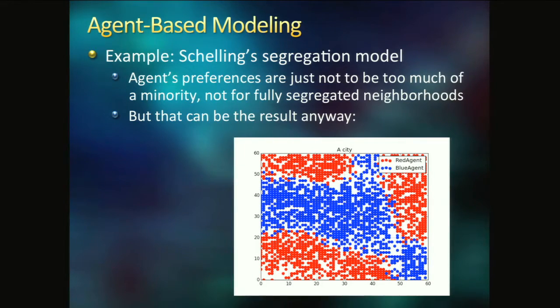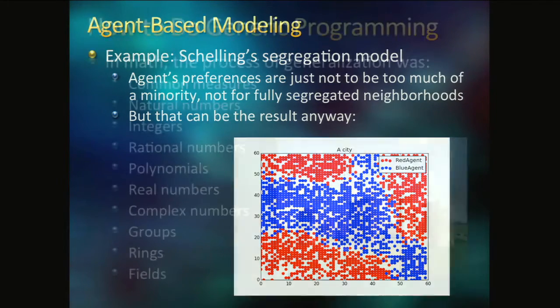Without anyone having a preference for completely segregated neighborhoods, we can get them anyway. We have red and blue agents here, and you just give them a minimum percentage. I want to see at least X percent blue around me or I'm uncomfortable and I go. And picking percentages fairly moderate, like 40%, you can wind up with a fully segregated city. This is an example of what you do in agent-based modeling. Create these software units, objects with simple rules, set them going, see what the result is.